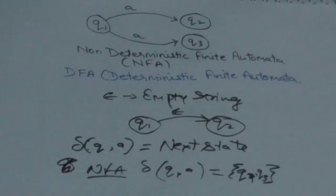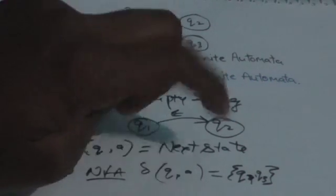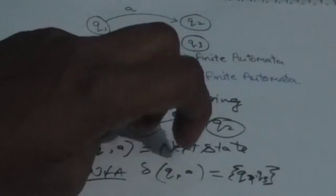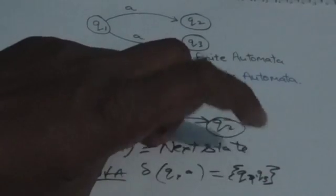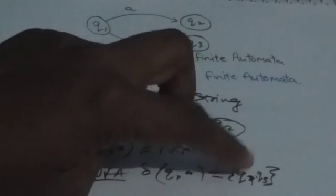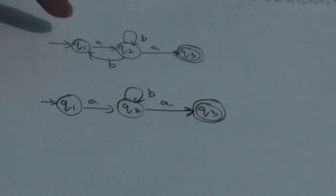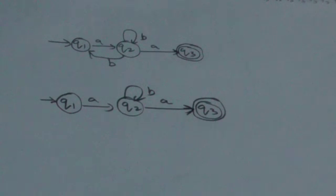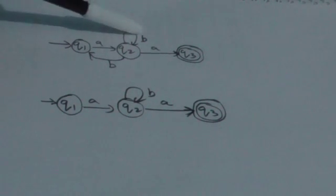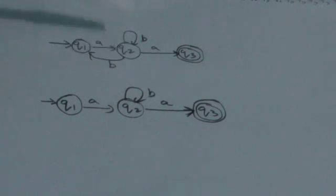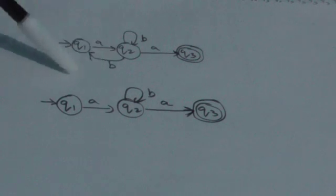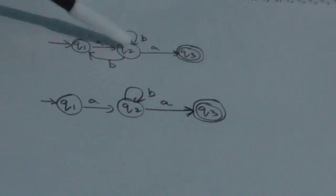One important clarification: this does not mean the machine jumps to both states simultaneously. It means the machine can jump to either one of the states listed in the output set. Now consider this example: for state q2 and input symbol B, the machine can either stay in state q2 or jump back to state q1, which is the initial state. So we have two possibilities.